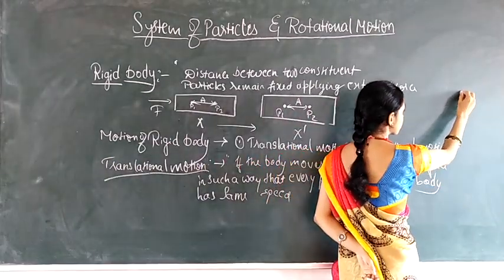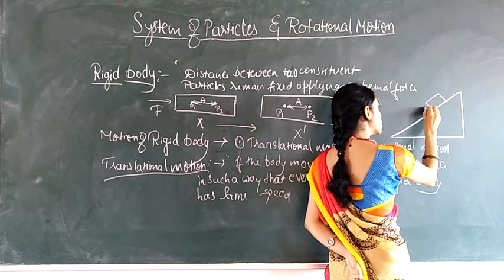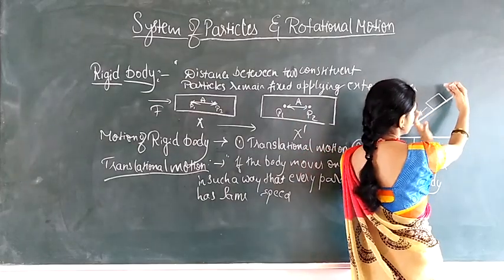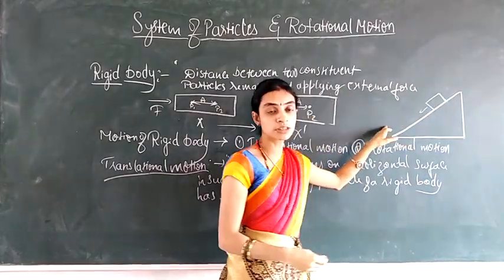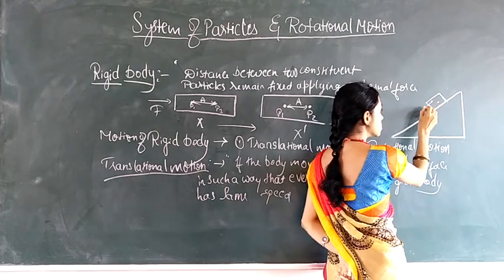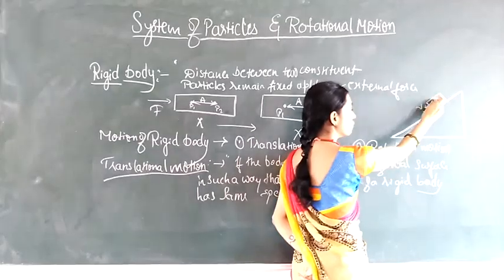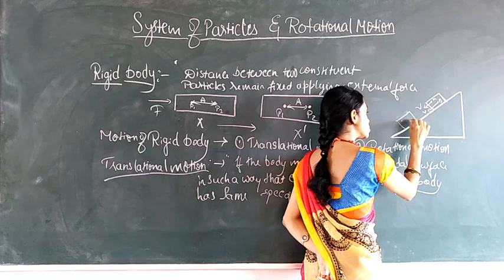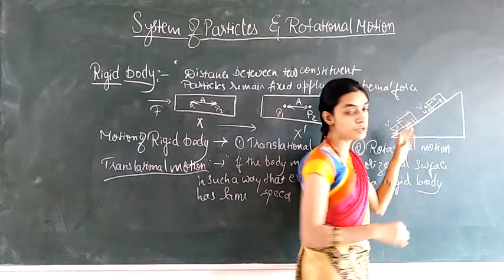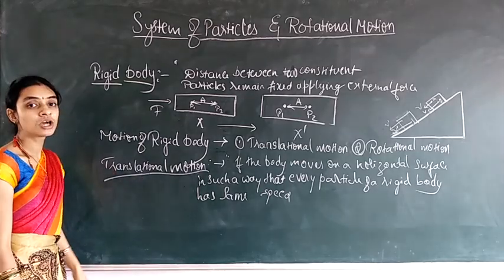For example, consider an inclined plane with a body sliding on it. At one position the speed of every particle is the same, and when the same body moves to another position, the speed of every particle still remains constant. This type of motion is called translational motion.